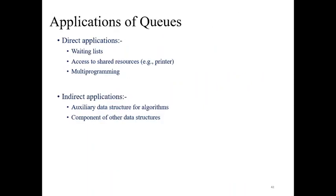In the application of Queue, we have direct applications and indirect applications. From the direct side we have waiting list, access to shared resources, printer, faxes, computers where we can access with remote access, multiprogramming, etc. While in the indirect application we have some auxiliary data structures, component about data structures, abstract data types and others we are going to see.